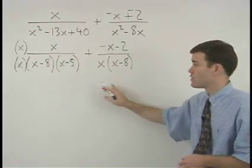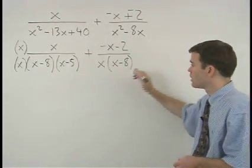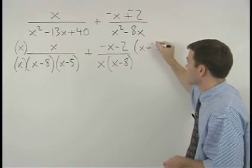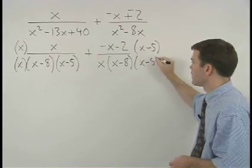Since our second denominator is missing an x minus 5 we multiply top and bottom of our second fraction by x minus 5.